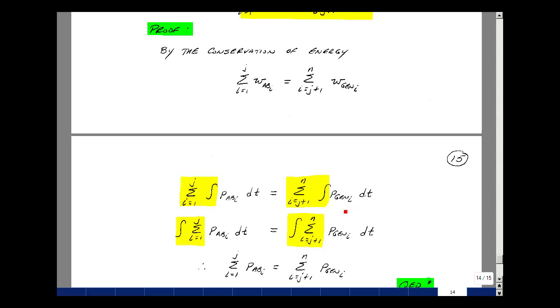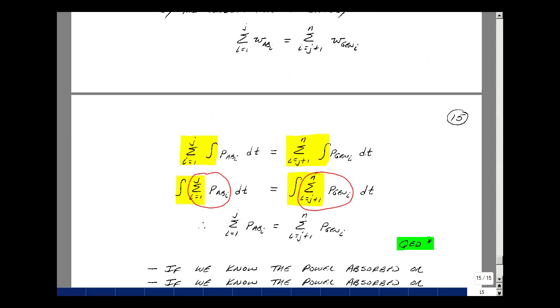I recall from calculus that the sum of the integral is the integral of the sum. If I just flip these two, then what I've got are two equations where these two terms must be equal to each other. You could also differentiate both sides of the equation. And so what we've got then is the power absorbed by the j-th elements equals the power generated by the remaining elements.